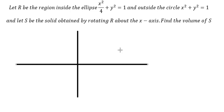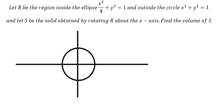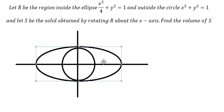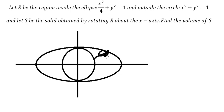First, we need to draw the circle — it looks like this — and the ellipse looks like this. In this situation, we consider the region inside the ellipse and outside the circle. H is the solid obtained by rotating that region about the x-axis.